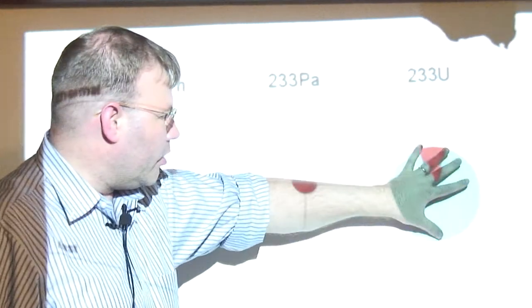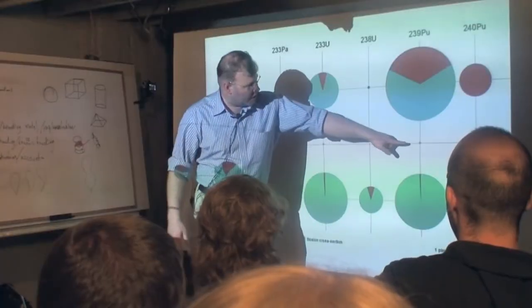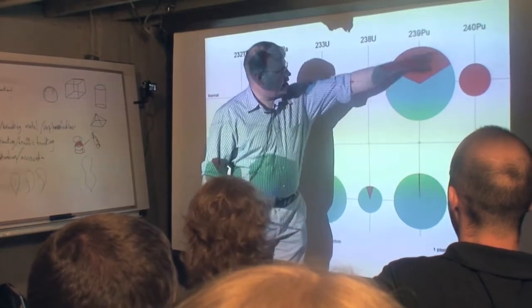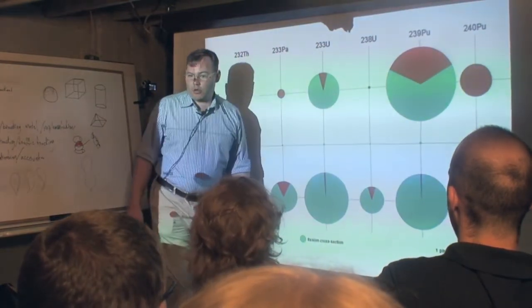Look how much bigger the cross-sections are in thermal than they are in fast. How many of these little dots are we going to need to add up to this size? We're going to need a lot.